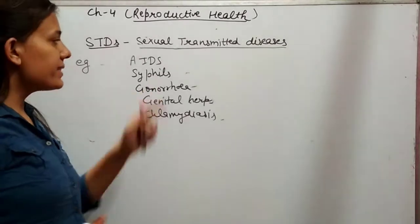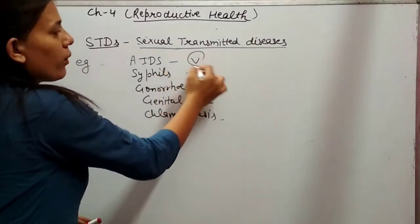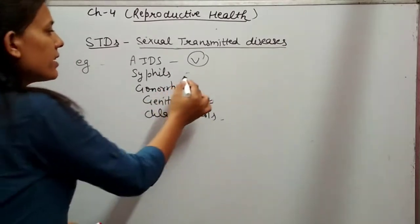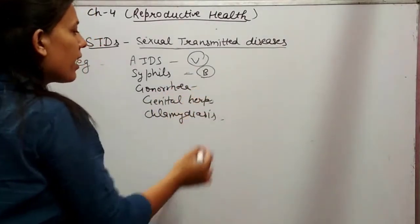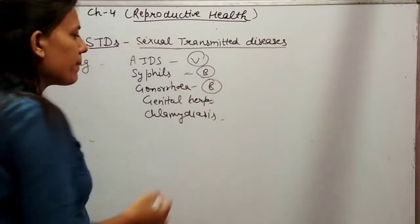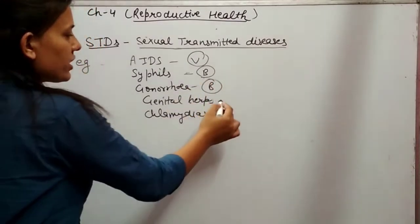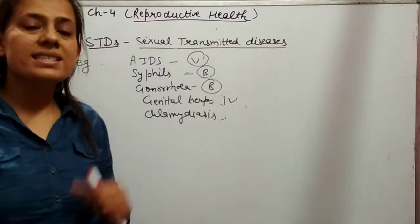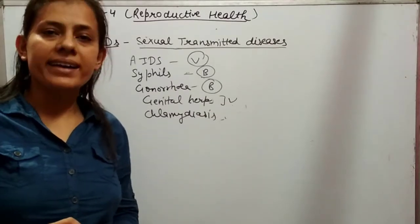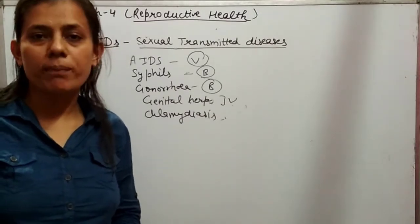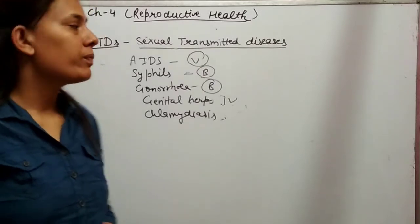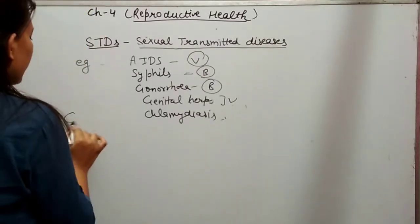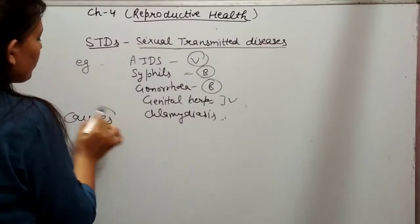Like AIDS, which is caused by the HIV virus — human immunodeficiency virus. Syphilis is caused by bacteria. Gonorrhea is caused by bacteria. Genital herpes is caused by viruses. These diseases may be caused by any kind of bacteria or other germs. Now we need to define what are the causes of STDs.